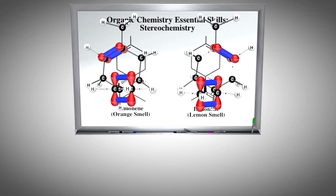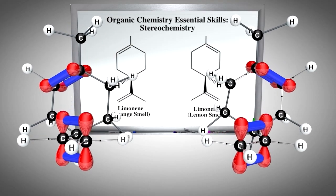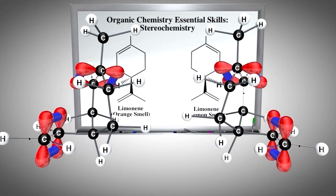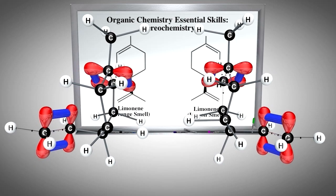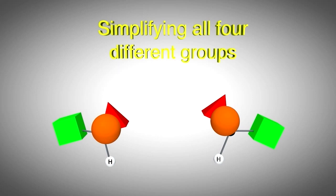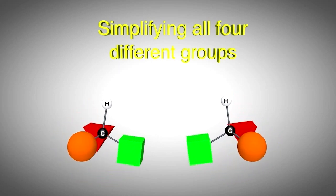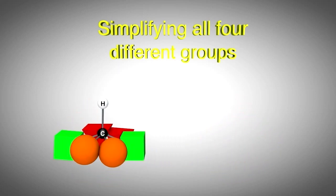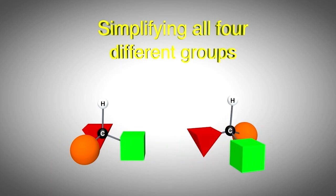This is clearly demonstrated after we mentally fold the two-dimensional Lewis structures into three dimensions. Here we see that they are actually mirror images of each other and that they are non-superimposable. In fact, only two groups can be overlapped at any one time, which are called a pair of enantiomers.